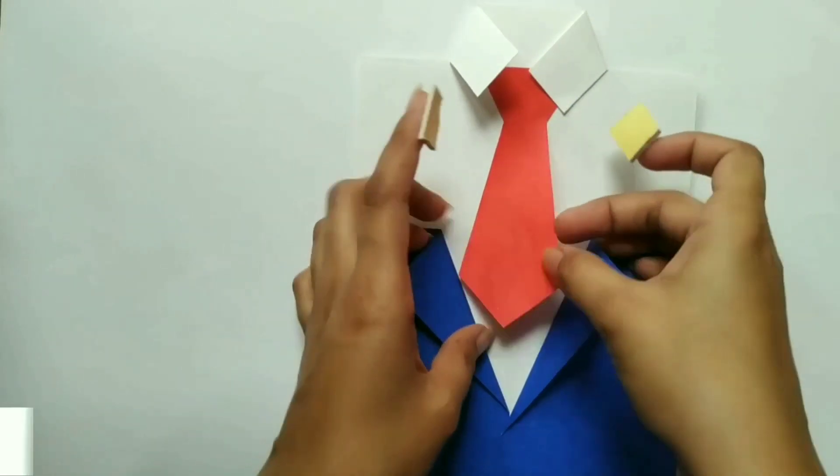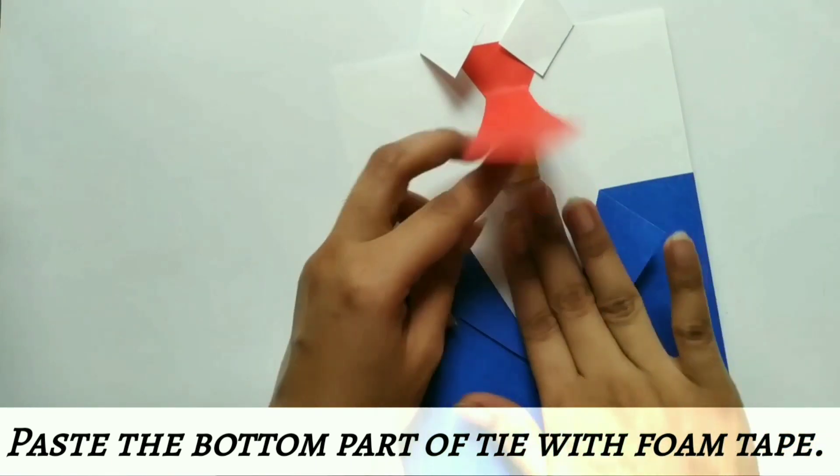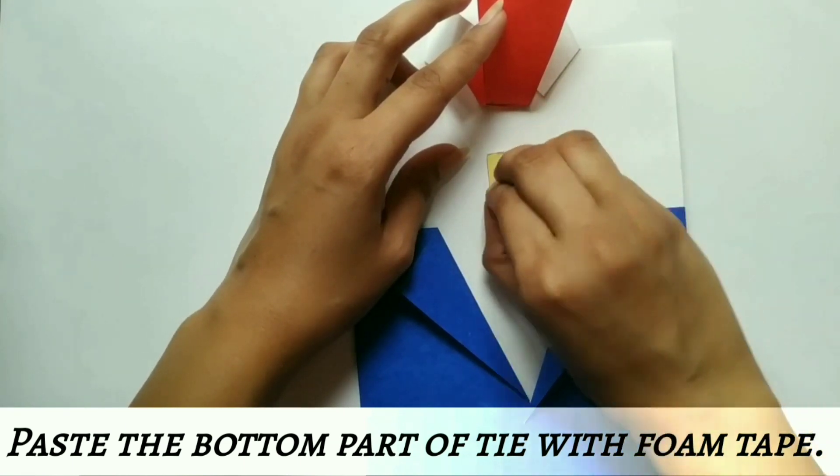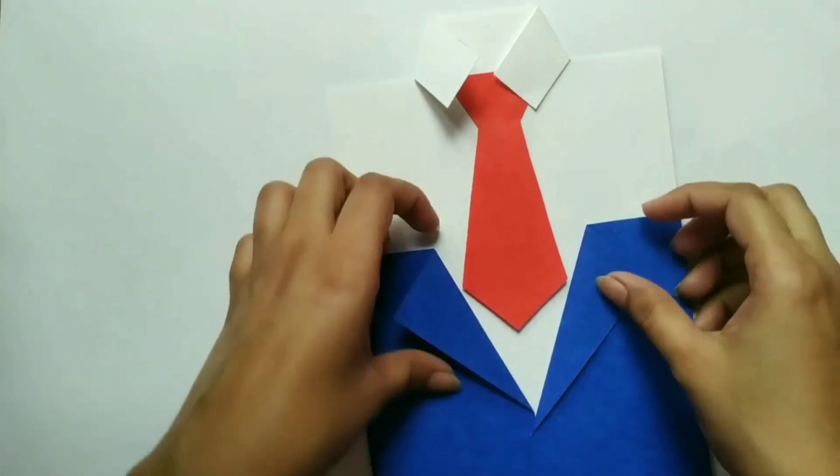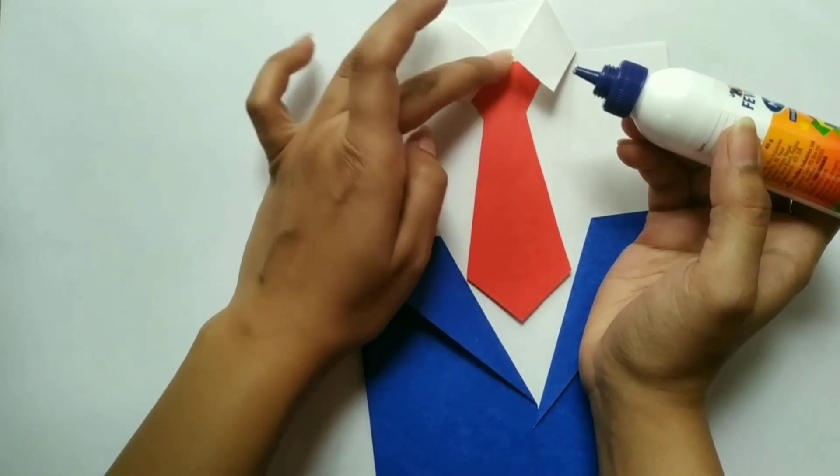Now here I am using double sided foam tape to paste this tie to give it more realistic look. You can also paste it with glue. Apply little glue to the collars too.